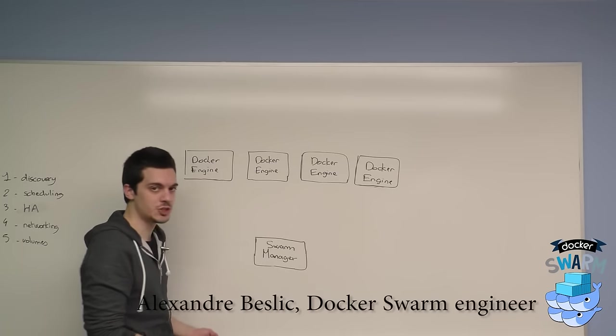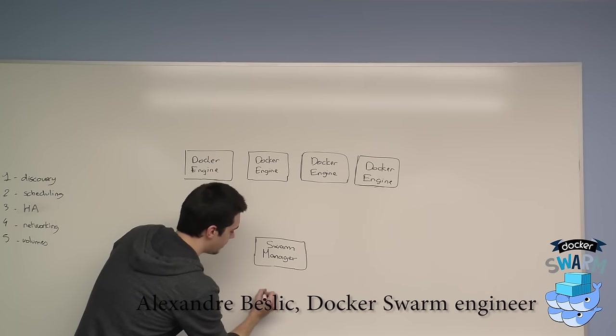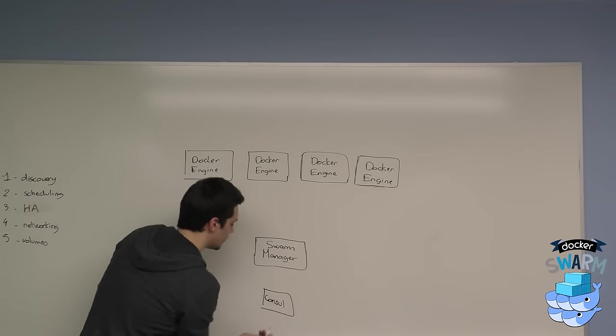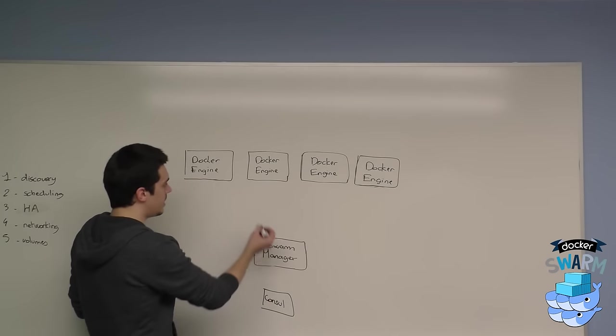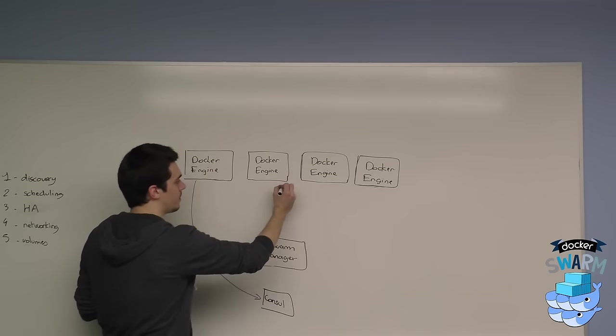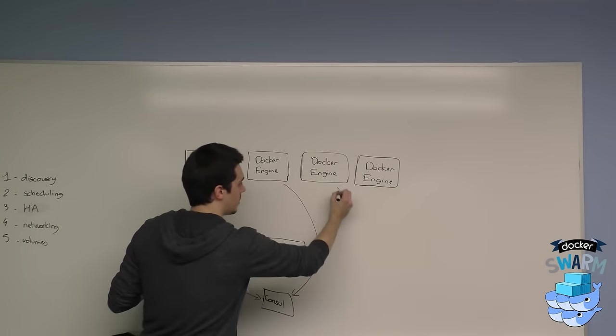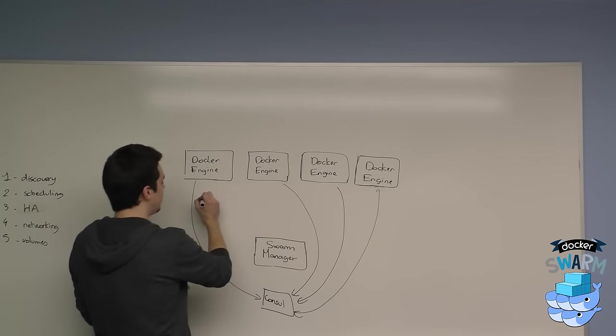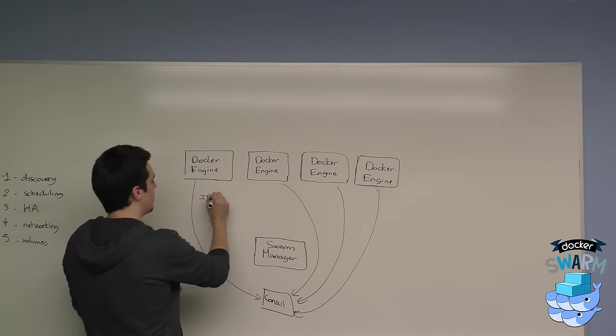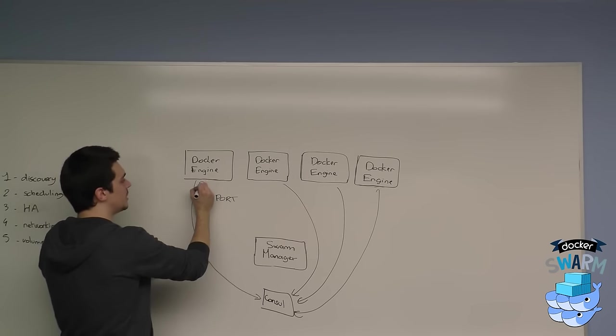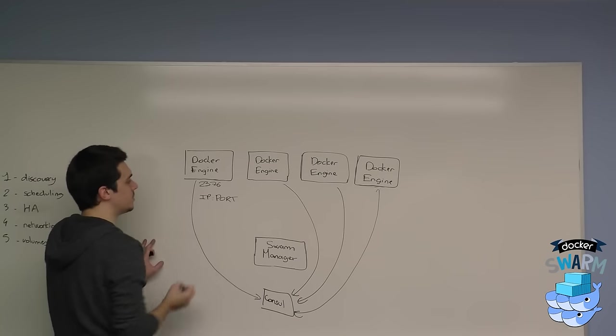The first one will be a distributed storage. So you have an external consul cluster, for example. You can also use etcd and zookeeper. And all the docker engines are going to register to the distributed store with basically their IP and port to the remote docker engines, which is usually 2376 for the secure port.